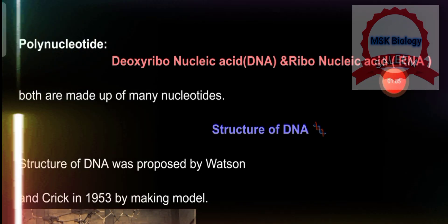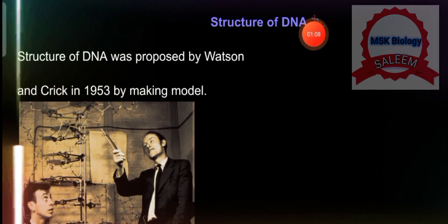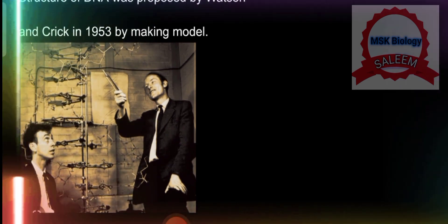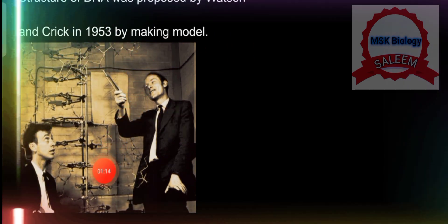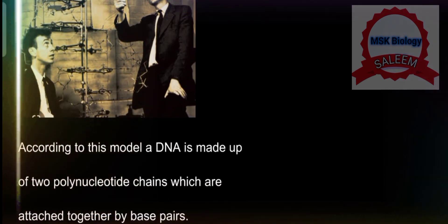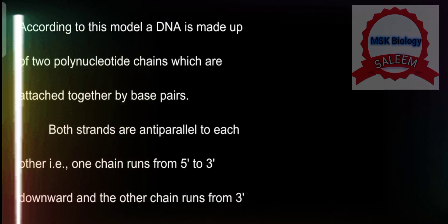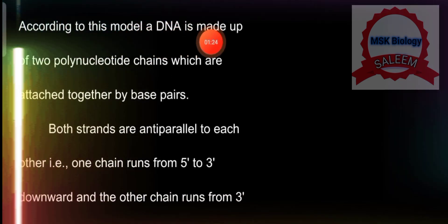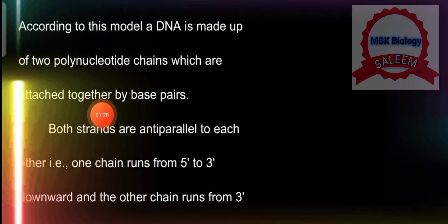This is the structure of DNA. The structure of DNA was proposed by Watson and Crick in 1953 by making a model. DNA ka jo model hai, Watson and Crick ne diya tha 1953 mein. According to this model, DNA is made up of two polynucleotide chains which are attached together by base pairs.